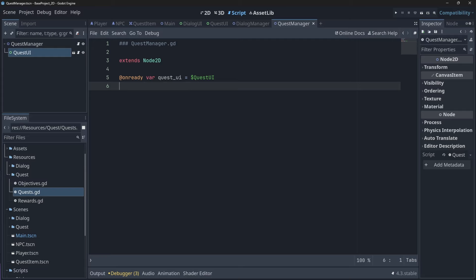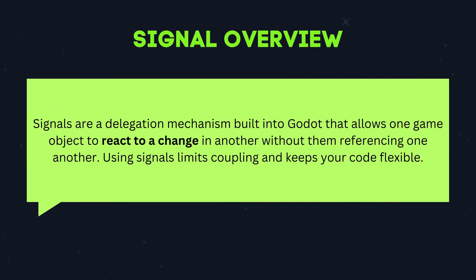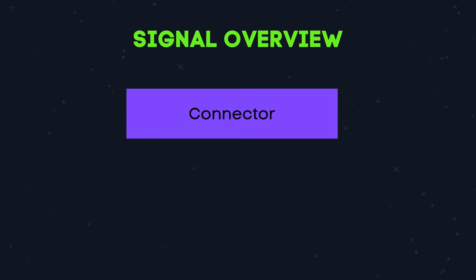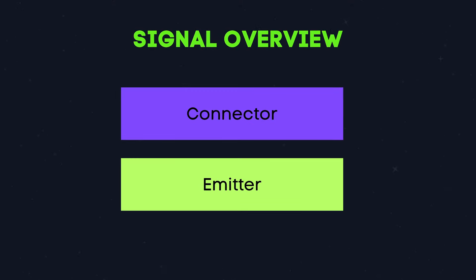Whenever we do any of these actions, we will need to find a way to notify our quest UI that our quest or objectives have been added, updated, or removed. To do this, we will have to define a few of our own custom signals. Signals in Godot act as a messaging system between nodes. I like to say signals are made out of two parts: connectors and emitters.